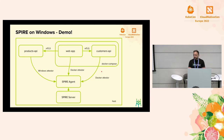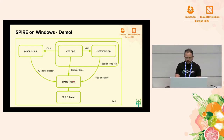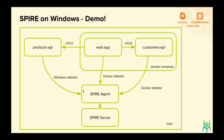In this demo, I want to demonstrate how we can use SPIRE to provide identities in a Windows environment. We have all the services we will be using: a SPIRE server and an agent running on a Windows host, together with a Products API that will make requests to the SPIRE agent using the Workload API. This Products API will have an entry configured to work with the Windows attester. On the other side, we have two services running in different containers — the Web App and the Customer API — each communicating with the SPIRE agent through the Workload API using entries with Docker attestor selectors. The Web App will connect with the Products API using mutual TLS with the certificates they received.